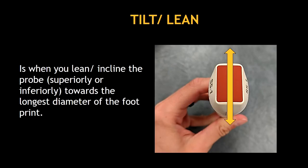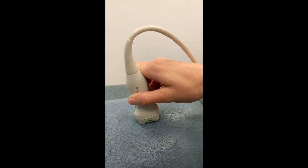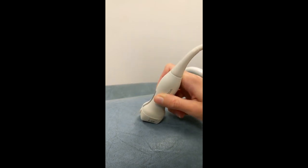And finally, tilt. This is when you lean or incline the probe towards the longest diameter of the footprint. You can tilt the probe superiorly or inferiorly. Here you can see how I'm tilting the probe up and down.